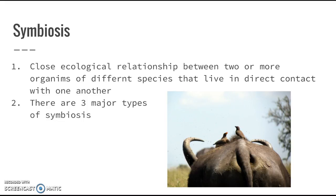Another form of how animals interact within an environment is symbiosis, which is a relationship between two or more organisms that live close together. They're going to be in direct contact with each other, but they're going to be different species. There are three major types of symbiosis that we're going to be talking about now.